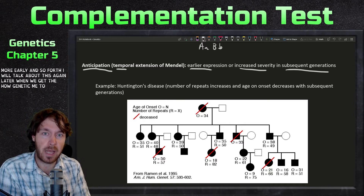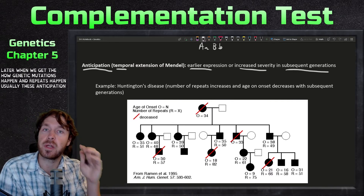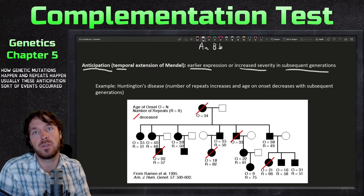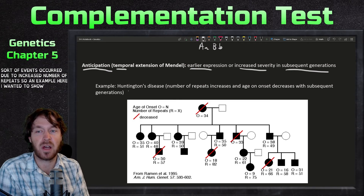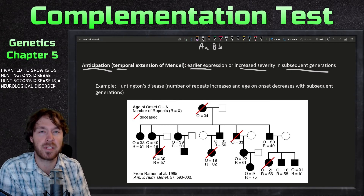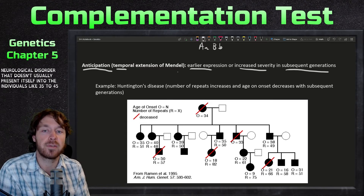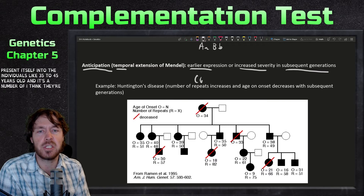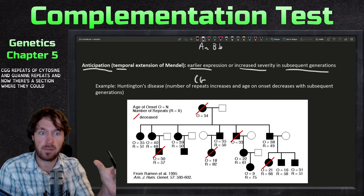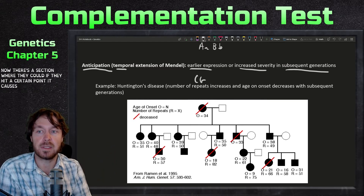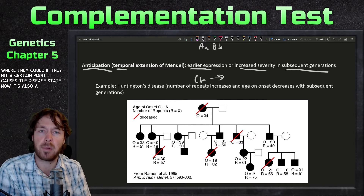We'll talk about this again when we get to how genetic mutations and repeats happen. Usually anticipation occurs due to an increased number of repeats. An example is Huntington's disease — a neurological disorder that doesn't usually present until the individual is 35 to 45 years old. It involves CAG repeats — cytosine, adenine, and guanine — and when the repeat count hits a certain threshold, it causes the disease state.